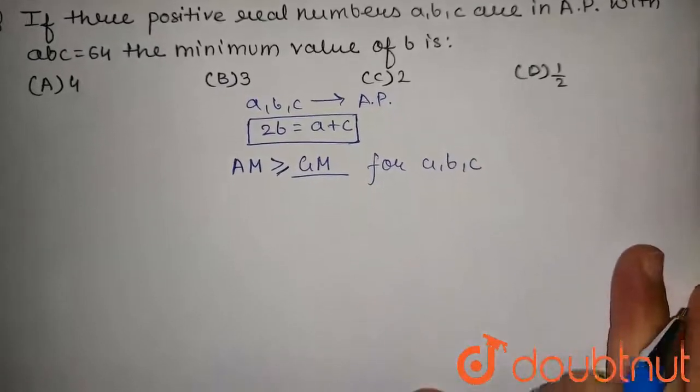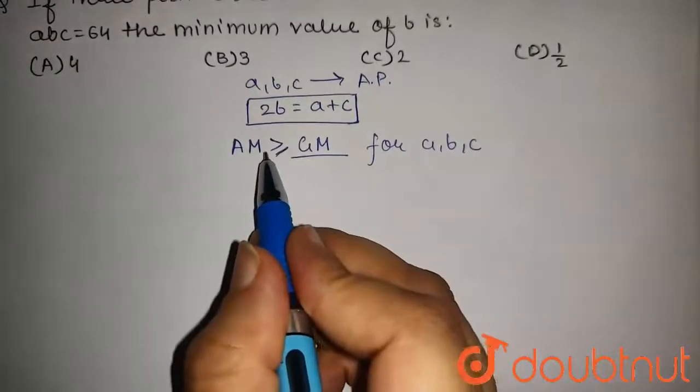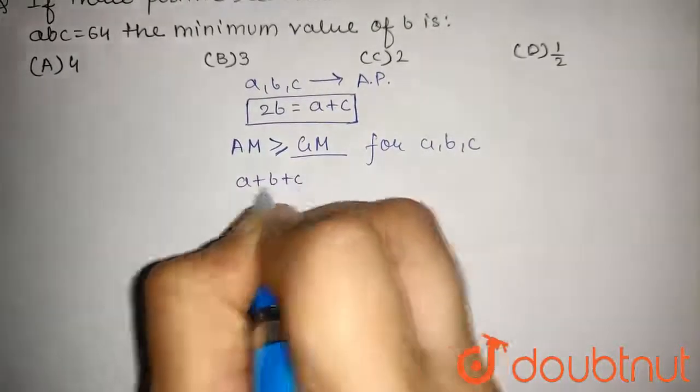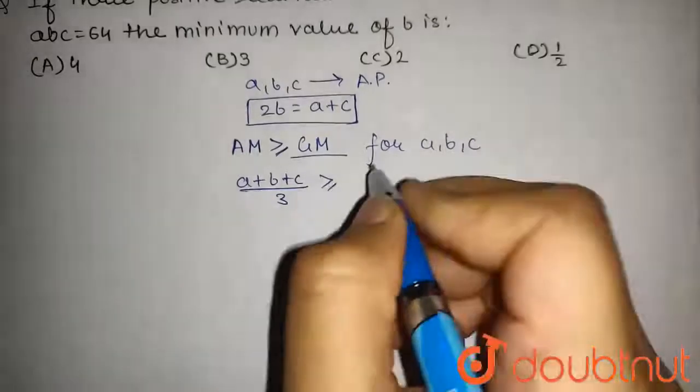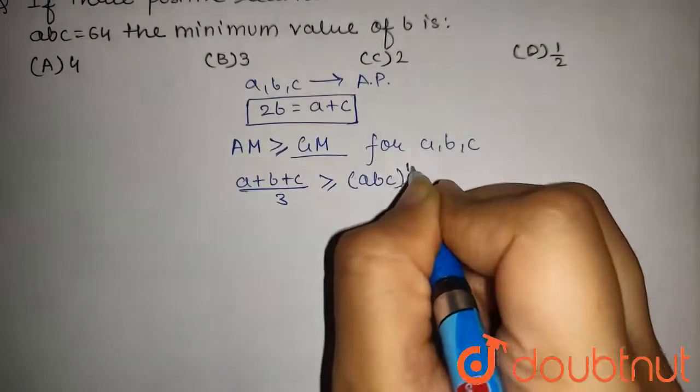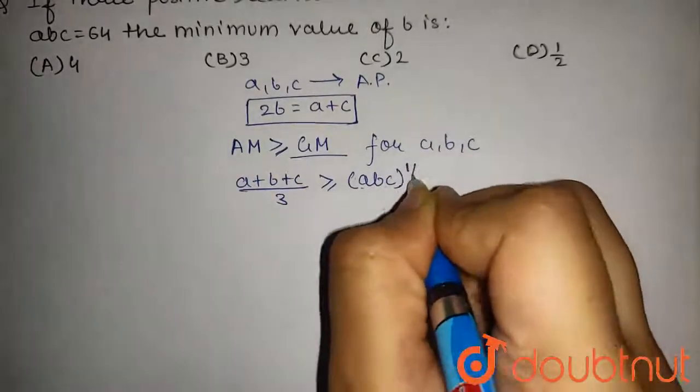we get arithmetic mean of A, B, C will be A plus B plus C upon 3 will be greater or equal to ABC to the power 1 by 3.